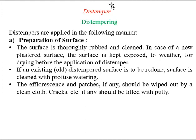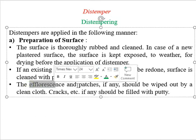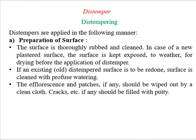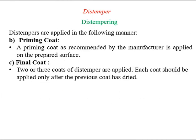Distemper is applied in a three-step process. First, prepare the surface: properly finish the interior walls, removing any cracks, patches, unevenness, or efflorescence before applying distemper. After surface preparation, a priming coat and final coat are applied on the wall, giving it a better appearance, better look, and better shine.